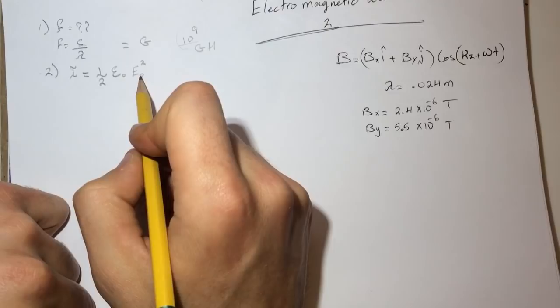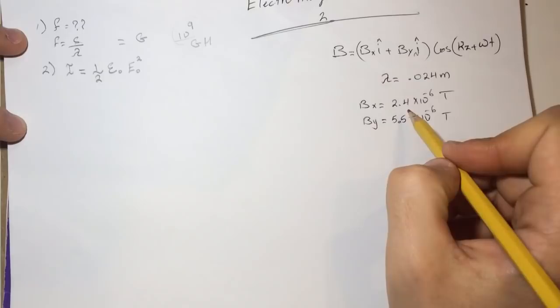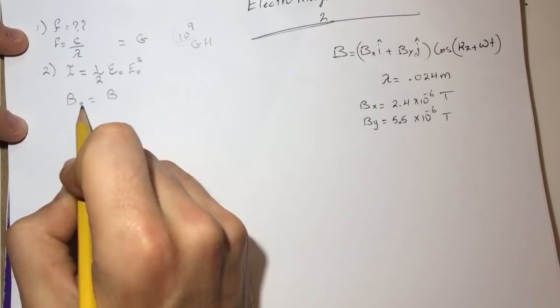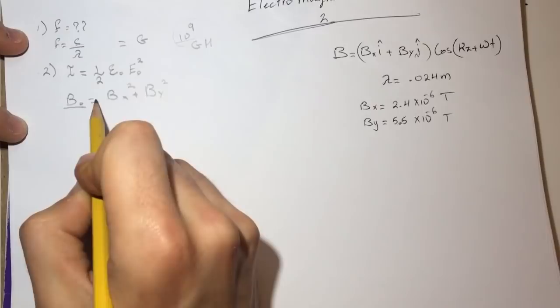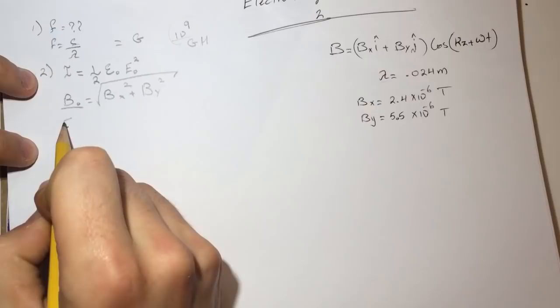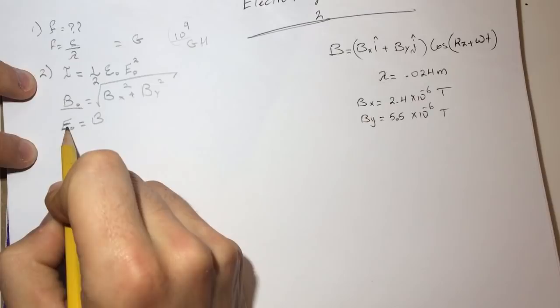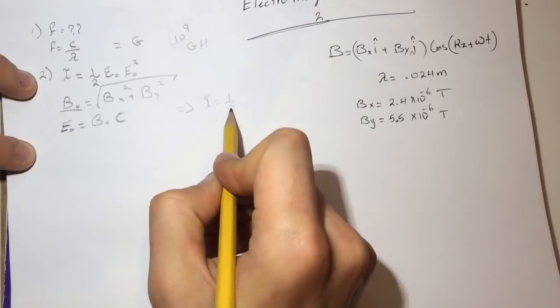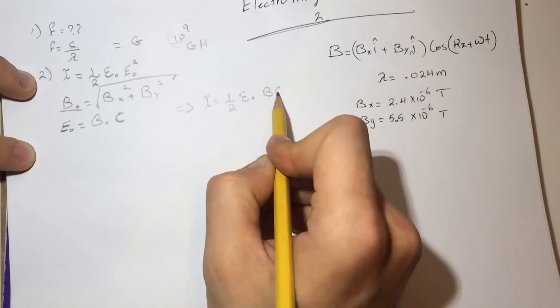So I equals half epsilon-naught times E-naught squared. We don't have E but we have B, and B is in two directions. So to find B-naught, since B is in two directions, we take the square root of Bx squared plus By squared. To convert from magnetic field to electric field, it's E-naught equals B-naught times c, the speed of light.